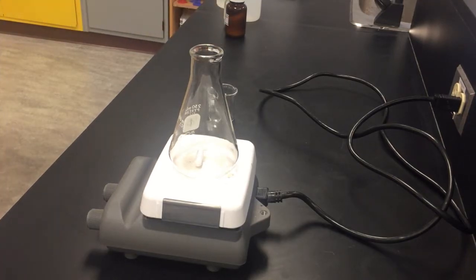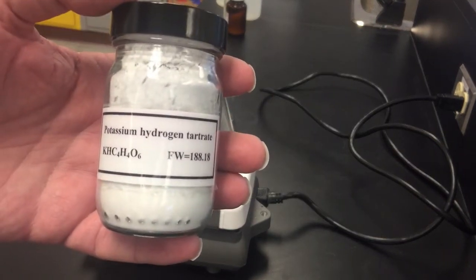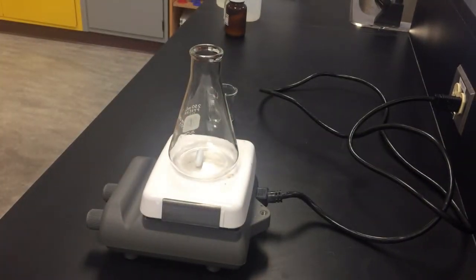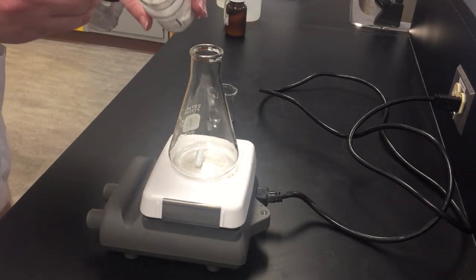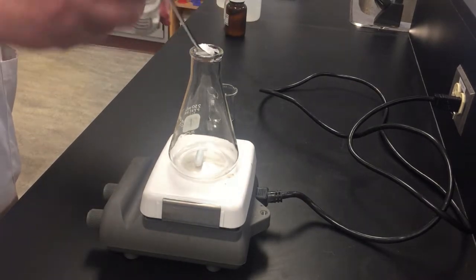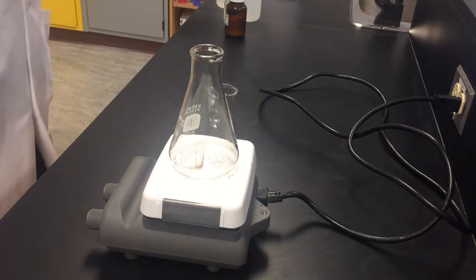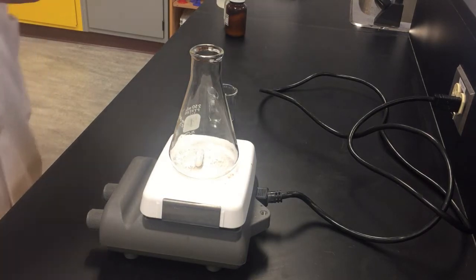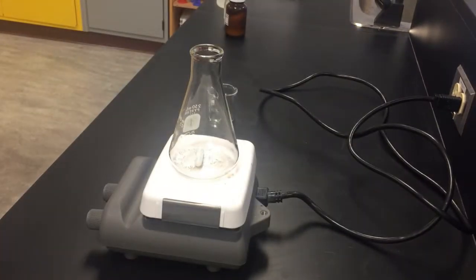First thing we're going to do is take some potassium hydrogen tartrate. We are going to put it in a flask with 0.100 moles per liter sodium chloride.